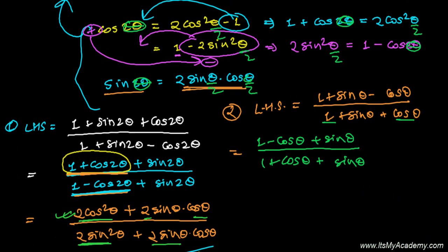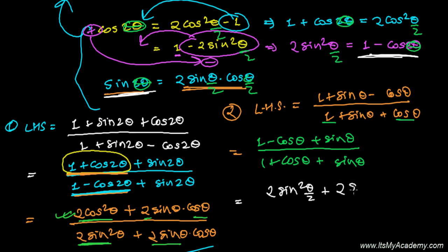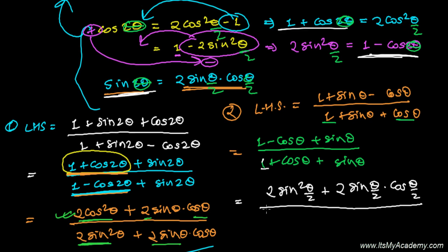Now let's substitute. 1 − cosθ = 2 sin²(θ/2), so the numerator becomes 2 sin²(θ/2) + 2 sin(θ/2) cos(θ/2), using the half-angle formula for sinθ = 2 sin(θ/2) cos(θ/2). In the denominator, 1 + cosθ = 2 cos²(θ/2), plus sinθ = 2 sin(θ/2) cos(θ/2).